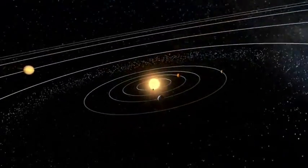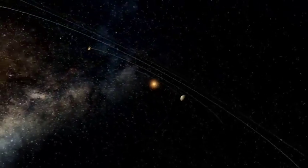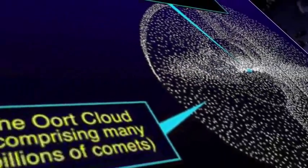Far beyond the orbit of Neptune, at the gravitational fringes of our solar system, sits a vast field of icy debris known as the Oort Cloud.